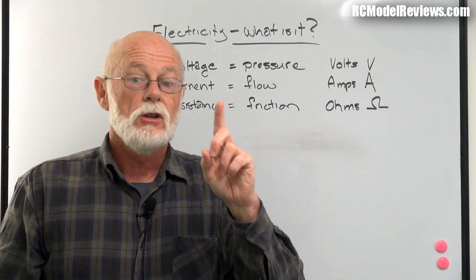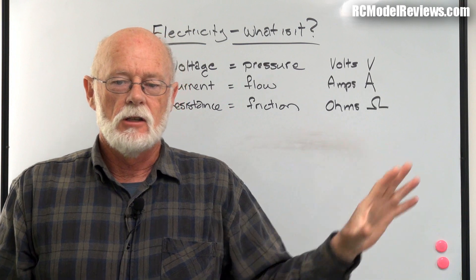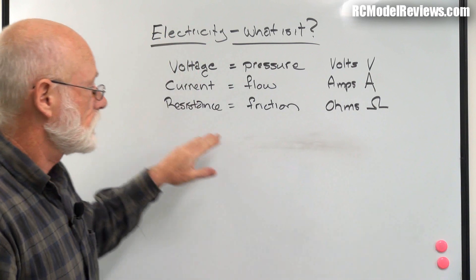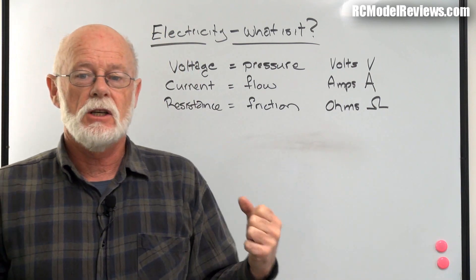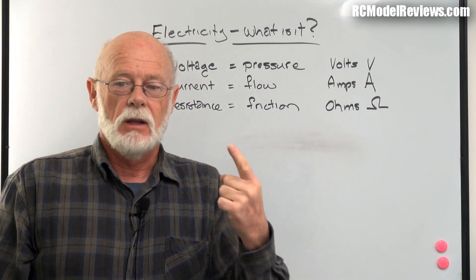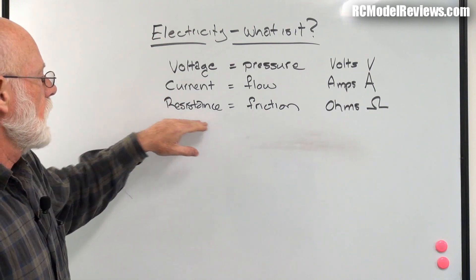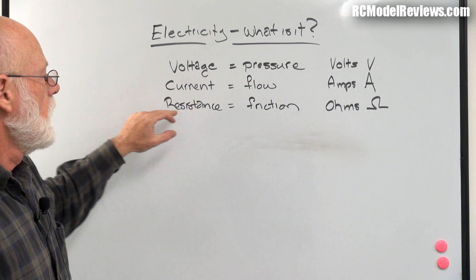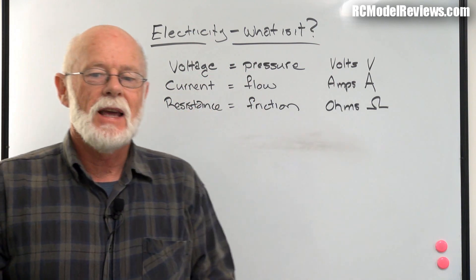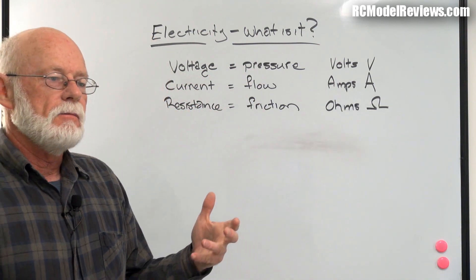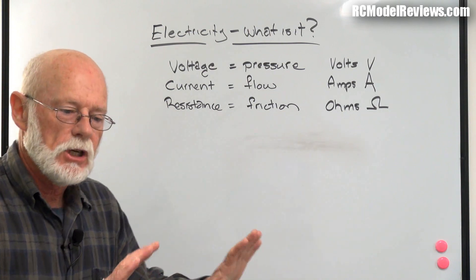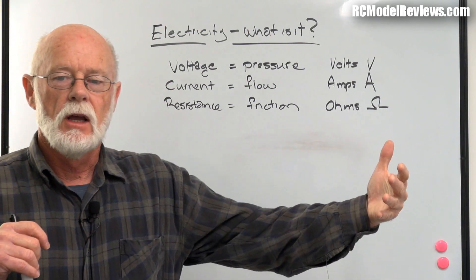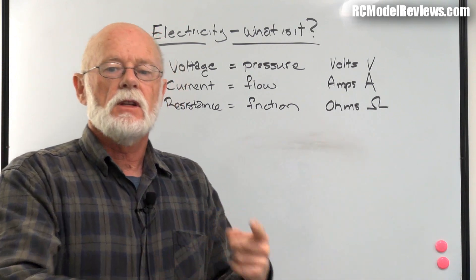There is a resistance to the flow of electricity. Everything has a resistance, superconductors excepted. For this discussion there's no such thing as a superconductor. Electricity is being pushed along - the voltage is pushing the electrons producing current flow - but there is a resistance that opposes that flow.